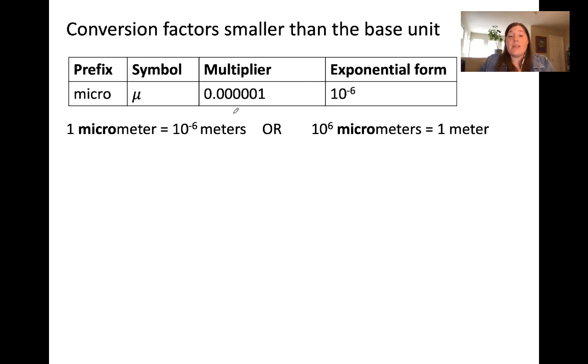Another way to think about this that can be easier to conceptualize is to think about how many times the small unit fits in the base unit. In this case, the small unit is micro. So in the case of length, we would have 10 to the 6 micrometers is equal to 1 meter. These are saying the exact same thing, but the first case is saying how many times does the base unit fit in the small unit, and it's a very small number of times.